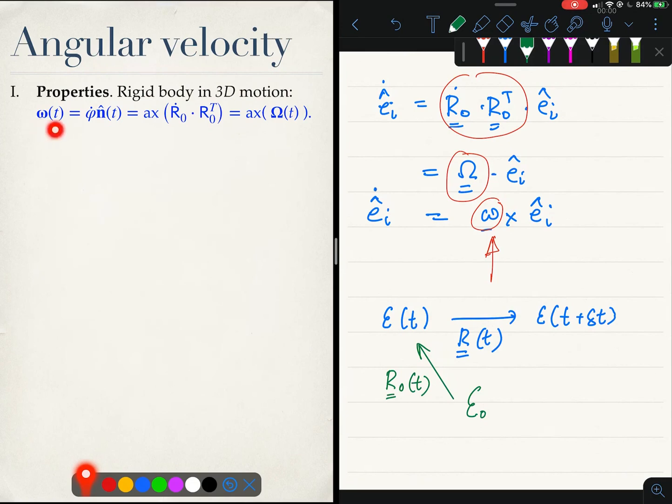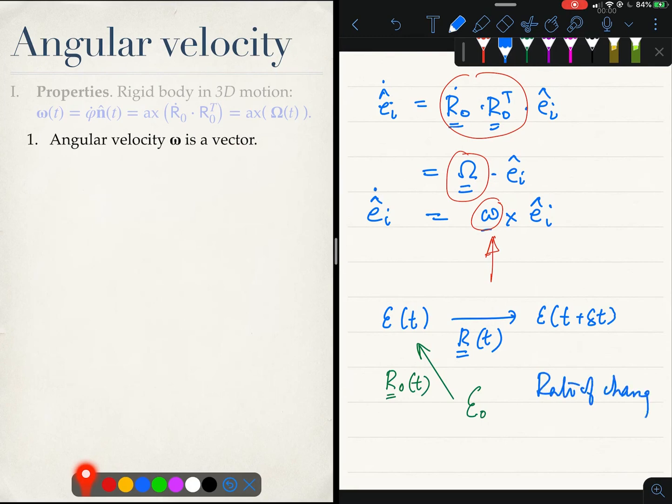What are the properties of this angular velocity vector? Most importantly it is a vector. Remember sometime ago we were discussing how to measure the rate of change of orientation. We were discussing how to measure this, and one of the proposals was why do not you simply use the rotation tensor of the kind R0 dot.